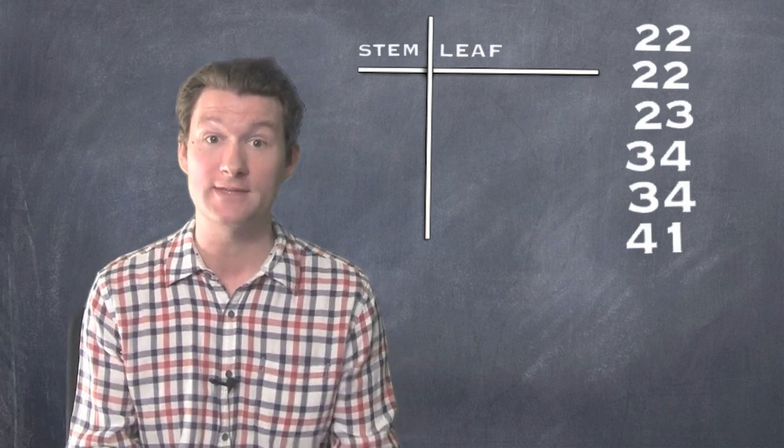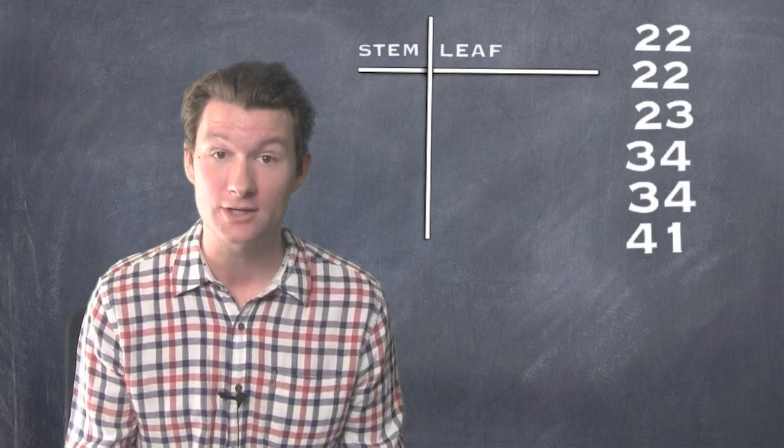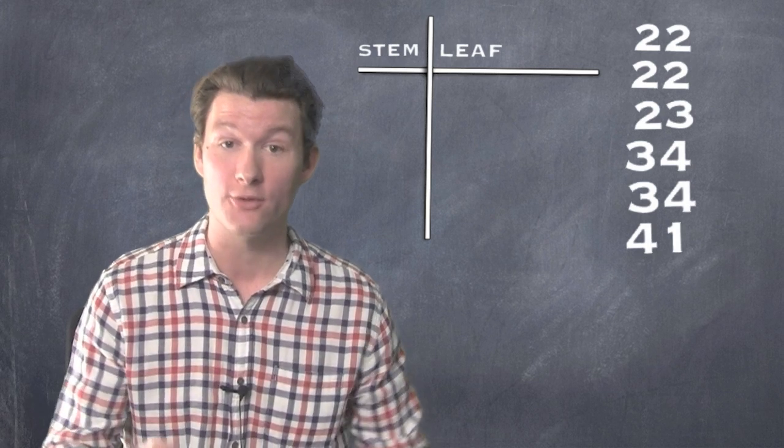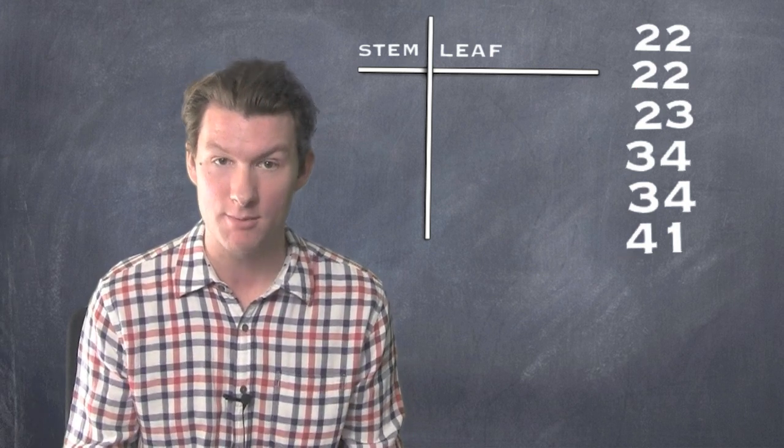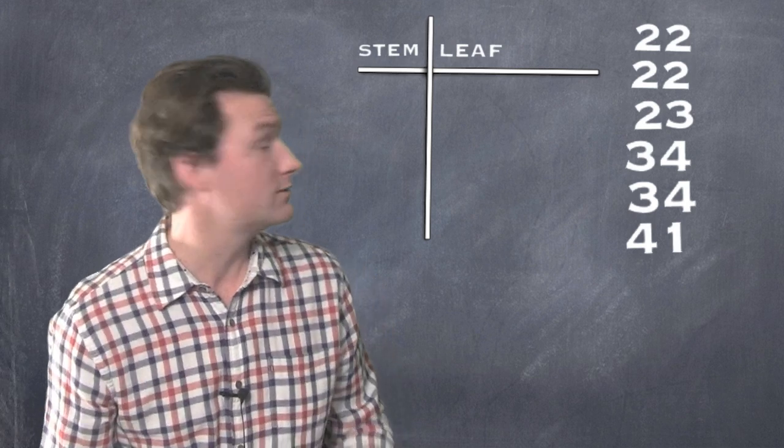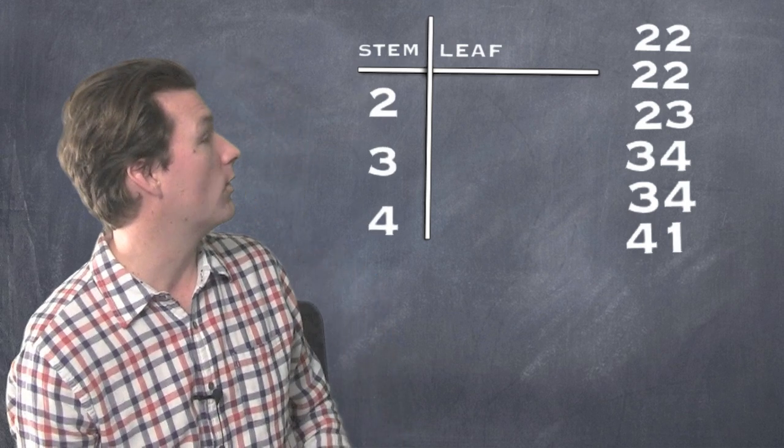The way you do that is you make the stem first, and the stem is the tens digit. And since we've got numbers in the 20s and the 30s and the 40s, those would be our three stem numbers: 2, 3, and 4. So let's write that. We've got 2, 3, and 4. That's our stem.